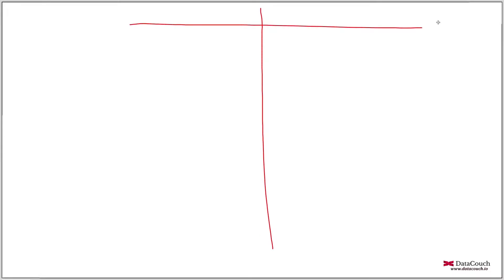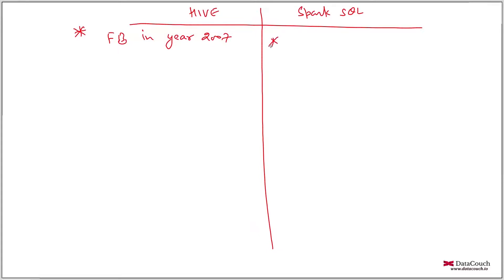Let's see the differences between Hive and Spark SQL. Hive was released by Facebook in 2007, while Spark SQL was released by Apache Software Foundation, backed by Databricks, in 2014.